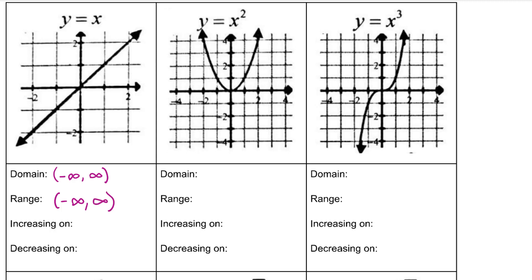For increasing and decreasing intervals, we are always reading what the range is doing as the x's increase — meaning as we look from left to right. A key point: we will always use parentheses for intervals of increasing and decreasing. That does not apply to domain and range, where you cannot always use parentheses. For y = x, starting from negative infinity and moving right, the y values are steadily increasing all the way from negative infinity to infinity, so we are decreasing on no intervals.